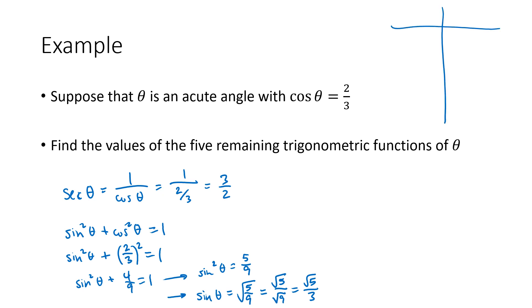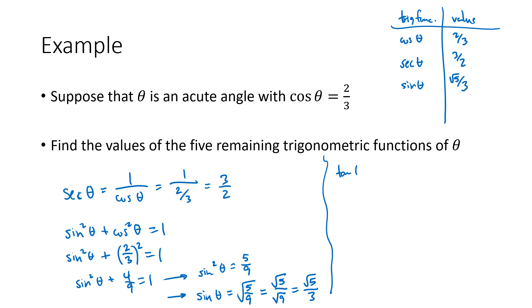So that's our secant theta and our sine of theta. Let's make a little chart to keep track of what we're doing. Cosine of theta is two thirds — that's the one they gave us. We figured out secant of theta is three halves. And sine of theta is square root of five over three. We're just going to keep using those identities to figure out what's missing. The next one we could figure out is tangent, since tangent of theta is sine of theta divided by cosine of theta — that's one of our quotient identities.